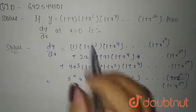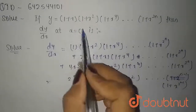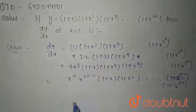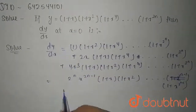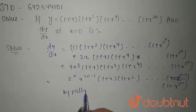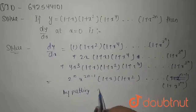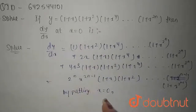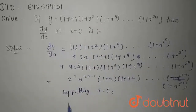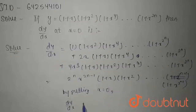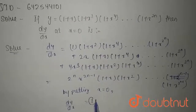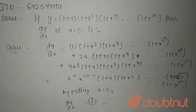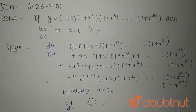So at x equals 0, by putting x equals 0 at every stage, you will get dy by dx is nothing but 1. So your answer is 1. Thank you.